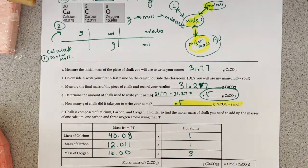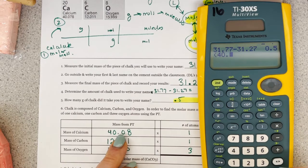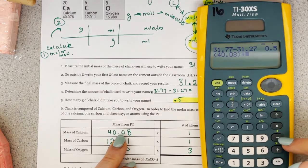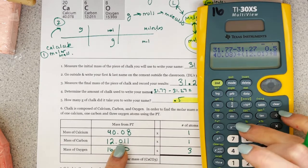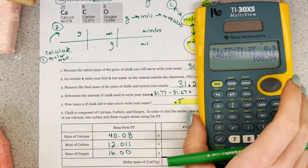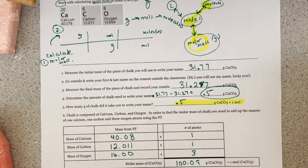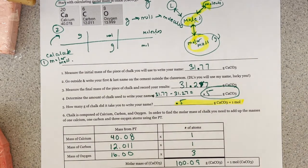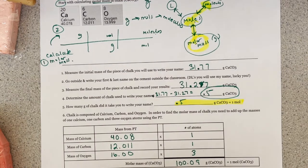Okay, so now I'm just going to go ahead and do, I'm going to say 40.08 plus 12.01 plus 3 times 16. Okay, and I get 100.09. If you put 100.1, that's fine. It doesn't really matter.